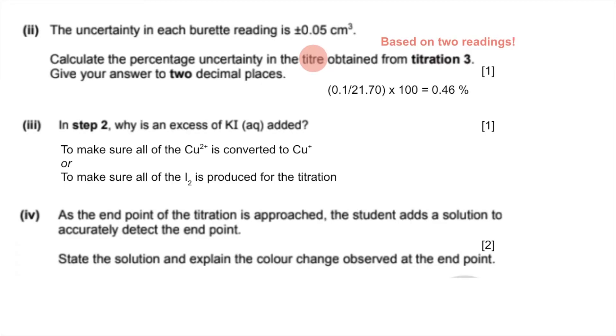Next part: state the solution and explain the color change observed at the endpoint. The solution added is starch indicator. As you're doing a thiosulfate-iodine titration, the iodine gets reacted away and becomes less and less brown, paler and paler. Eventually it would go yellow to colorless, but it's very difficult to see the endpoint.